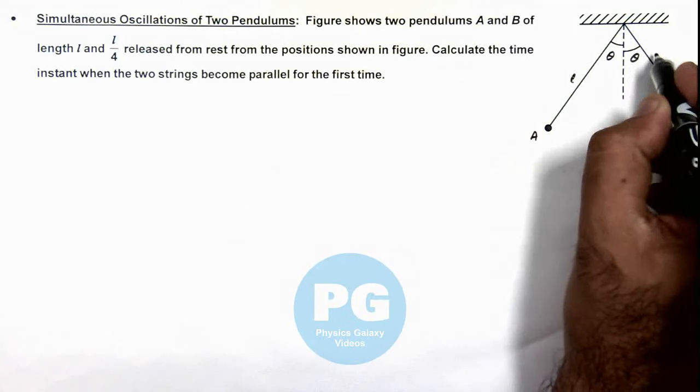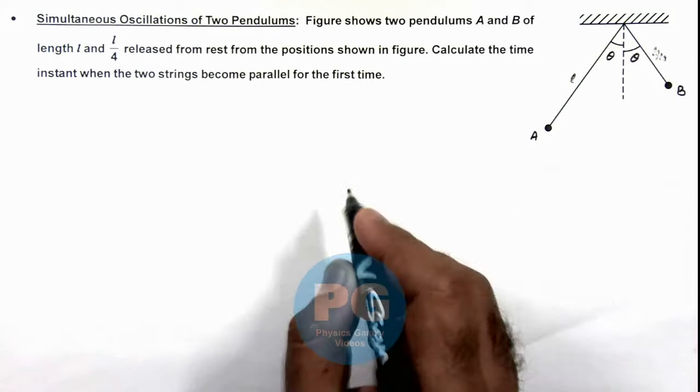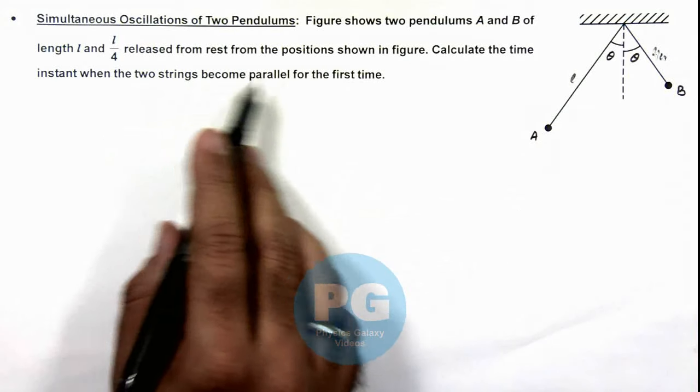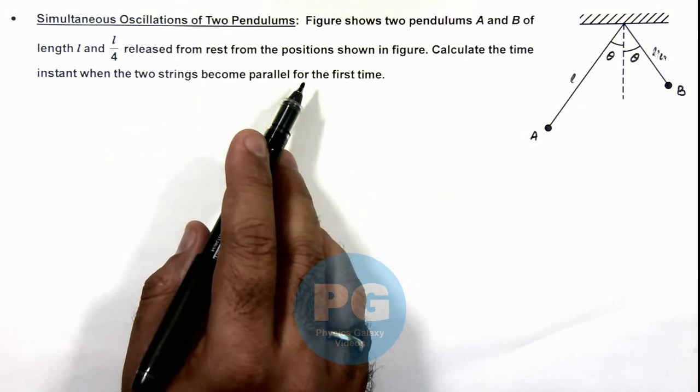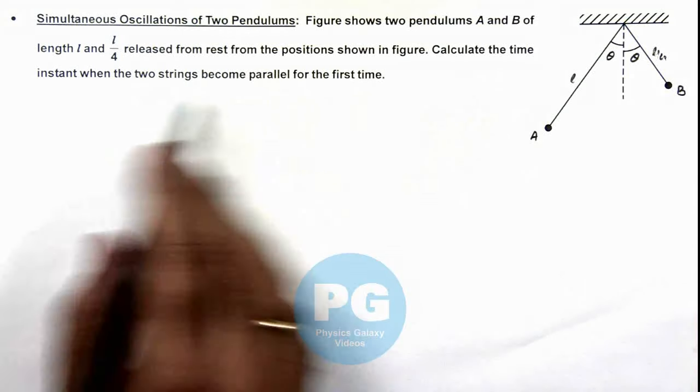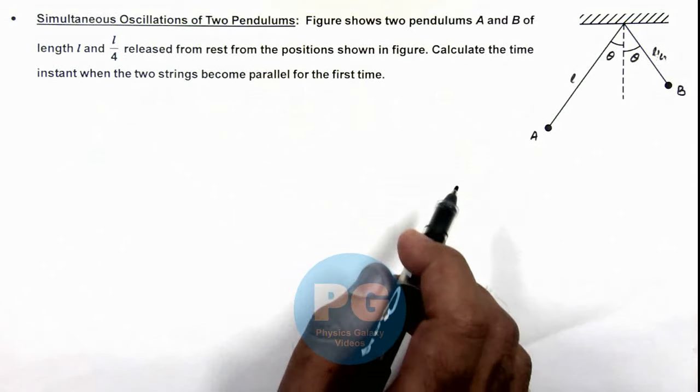l and l by 4. They are released from rest from the position shown in figure. We are required to calculate the time instant when the two strings become parallel for the first time.